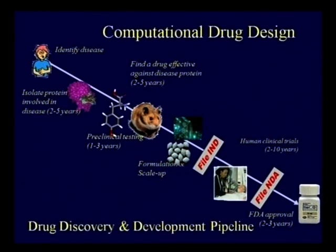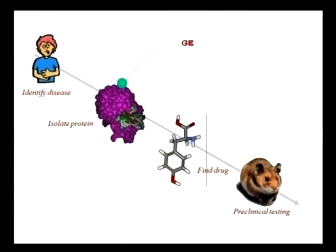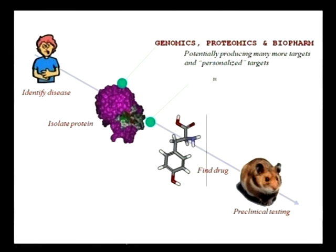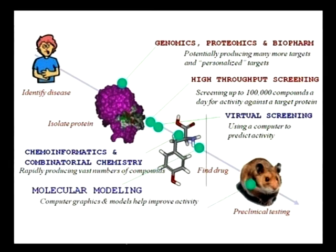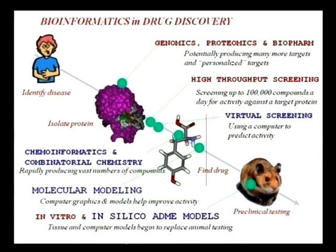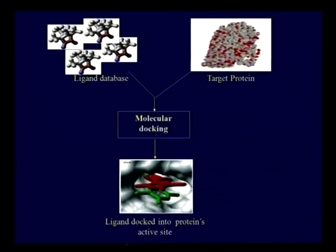You can tailor-make drugs — paracetamol can cause damage to somebody and be very good to somebody else. In future, drug designs will be based on the human genome project. Applications in genomics, proteomics, and biopharma are enormous, requiring high-throughput sequencing, chemoinformatics, combinatorial chemistry, molecular modeling, and in vitro and in silico models. This helps identify disease, isolate proteins, find drugs, and perform pre-clinical tests before administering to human beings. Ligand databases, target proteins, and molecular docking are all made possible through bioinformatics advancement.